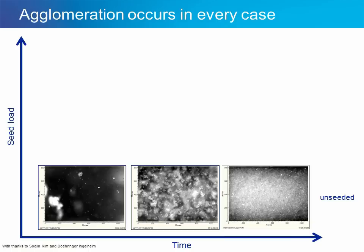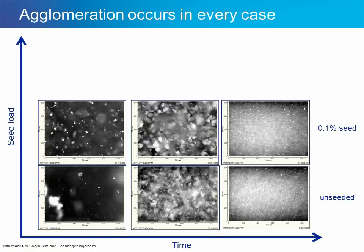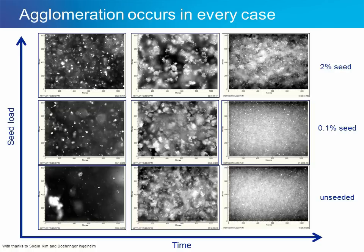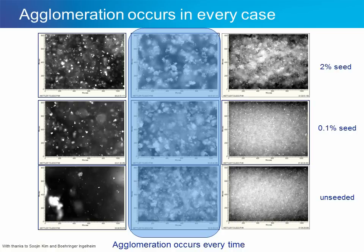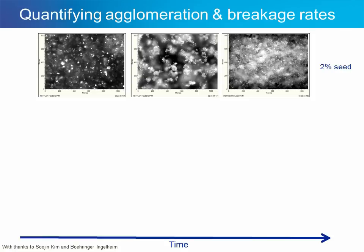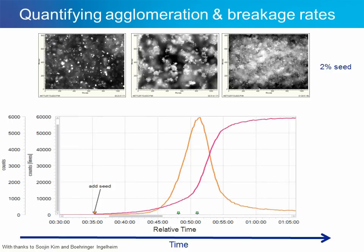At the bottom we have the unseeded crystallization process showing what it looks like as time progresses, and as we increase seed loading we can actually begin to see differences in the mechanisms that occur during crystallization. What's apparent from this set of images is that agglomeration occurs every time regardless of seed loading used, but the visualization really helps us understand that this agglomeration step has occurred, and we can also see qualitative differences in what the crystallization looks like. Looking at the 2% seed crystallization process with our ParticleTrack data — which tracks the rate and degree of change to particle size and count in-process — we can begin to obtain more quantitative information about what's happening during this seeding step.